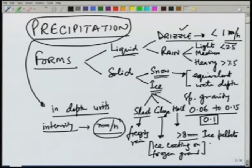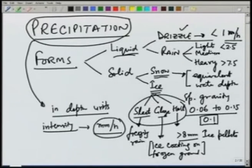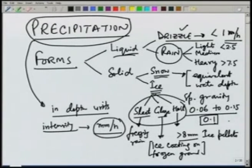These — sleet, glaze, and hail — are not very common, so we will not study them in detail. The liquid form, which is rain, is naturally what will concern us very often. We will mostly discuss in terms of rain, and sometimes we will talk about snow, but we will concentrate on rain.